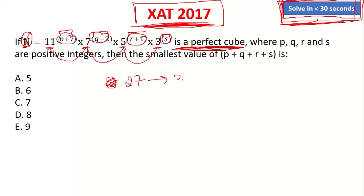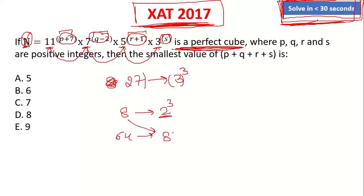For example, 27 is a perfect cube of 3. 3 to the power 3 is 27. 8 is a perfect cube of 2. 64 is a perfect cube of 4. But 8 can be written as 2 raised to the power 3, and 4 can be written as 2 squared — so 64 is 2 raised to the power 6, because 2 cubed cubed gives 2 to the power 6.